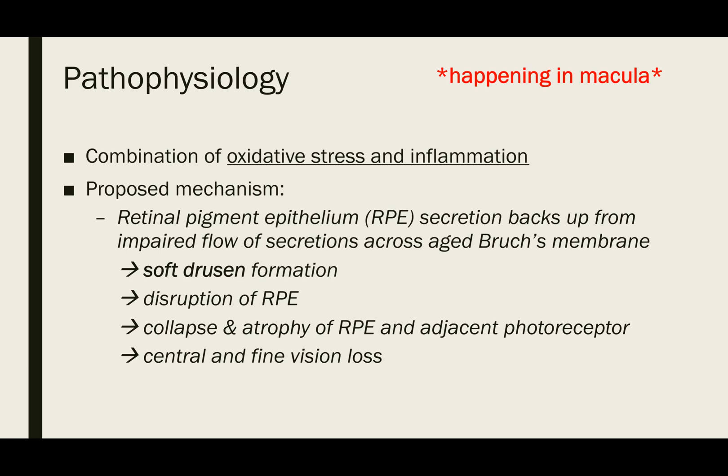Let's go over the pathophysiology of AMD to understand how it causes vision loss. Current studies suggest that a combination of oxidative stress and inflammation play key roles in the pathogenesis of AMD, though the precise roles of these two processes are not fully fleshed out yet. A recent study has proposed that the mechanism involves the backup of secretions made by the retinal pigment epithelium. Normally, these secretions flow across Bruch's membrane, a thin extracellular matrix that separates the retina from the choroid. When these secretions cannot cross, they clump together to form soft drusen. These abnormal accumulations disrupt the RPE and eventually lead to atrophy of that layer and the adjacent photoreceptors, causing decreased visual acuity in the macula.